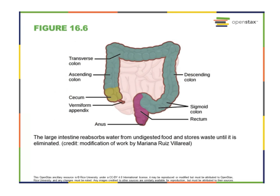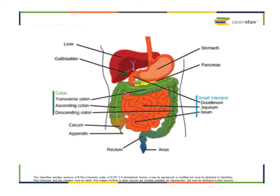The large intestine is really important in the absorption of water — it helps maintain hydration in the body and makes sure we don't lose a lot of water in the digestive process. The colon is home to a lot of different microbiota. When people talk about microbiomes in the context of gut health, they're largely talking about this microbiome in the large intestine. We still don't fully understand the consequences of these microbiomes, but we're starting to understand that they're very important to human health and to homeostatic processes.